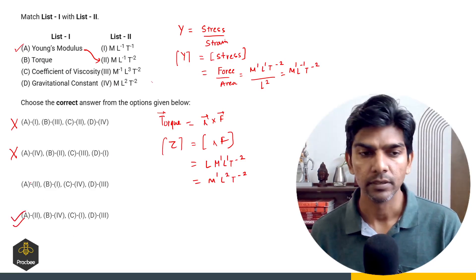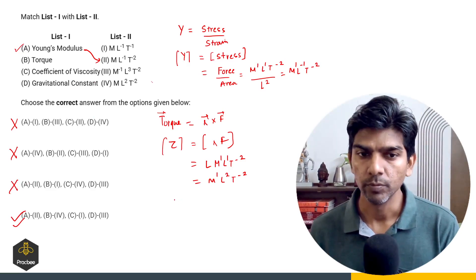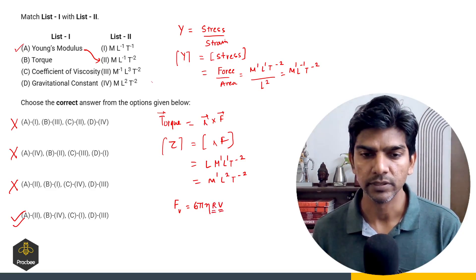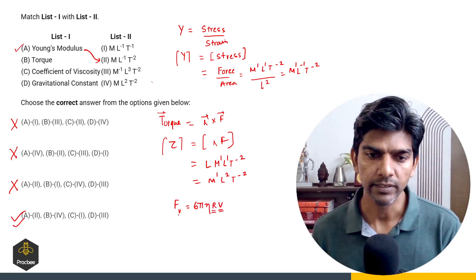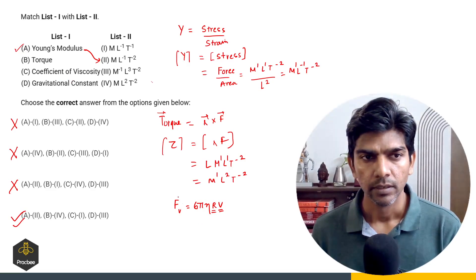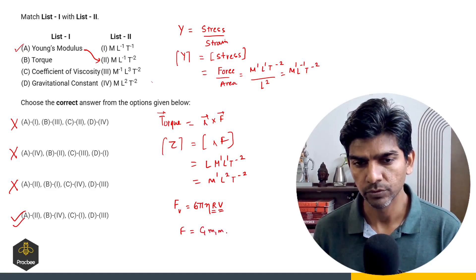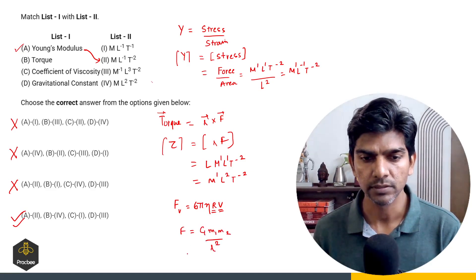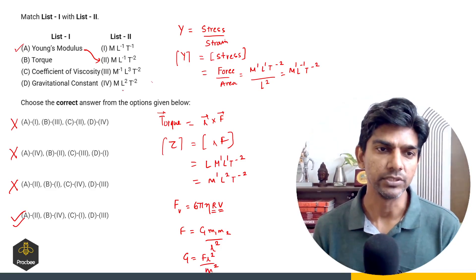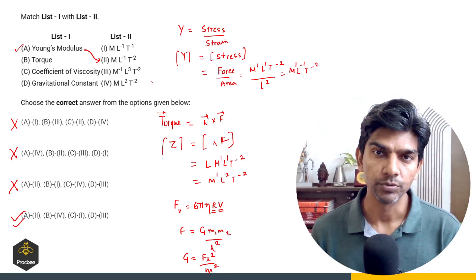So option 4 is the right answer. Similarly, you can check for coefficient of viscosity using the formula for viscous force: F equals 6π·η·R·v, where R is the radius, v is the velocity, and 6π is a dimensionless constant. For gravitational constant, you can use Newton's law of gravitation: F equals G·M1·M2 by R squared, giving G equals F·R squared divided by M squared. I recommend always using the elimination technique to eliminate 2 or 3 options.